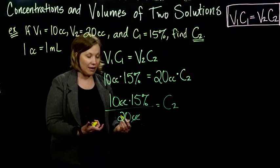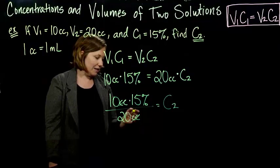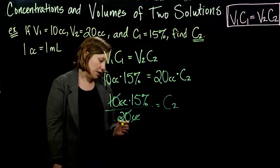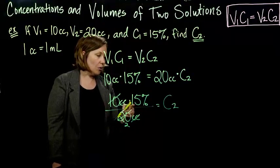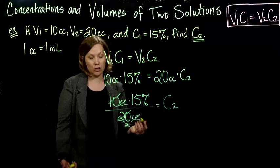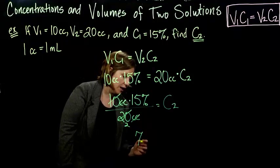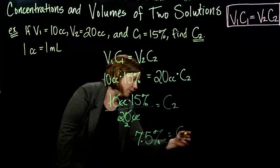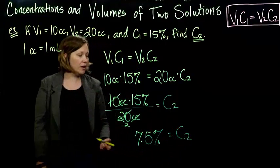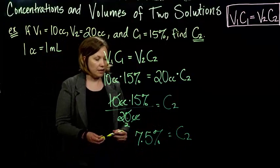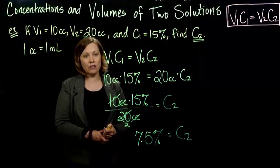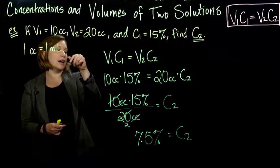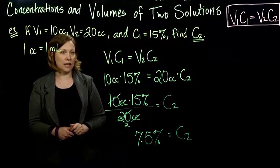So units can cancel out just like anything else, and we can reduce this fraction if you'd like. This becomes a 2 down here. So what we have is 15% divided by 2. So 15 divided by 2 gives me 7.5, and I still have the percent hanging out, it didn't cancel out with anything. And there we go, 7.5%. And so what this tells me is that the concentration of my solution after it's diluted is now 7.5%.